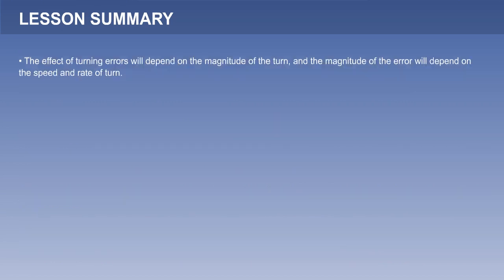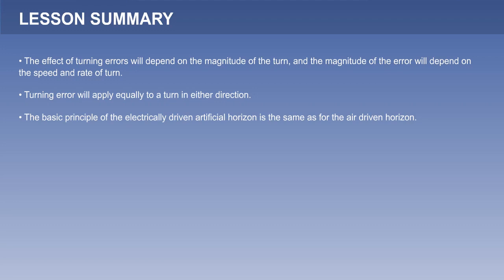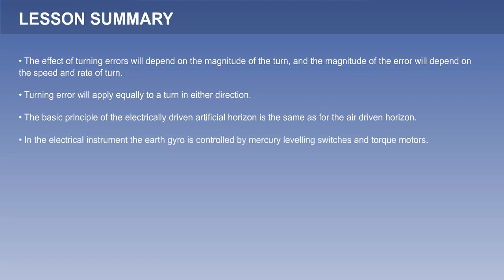The effect of turning errors depends on the magnitude of the turn and the speed and rate of turn, and the error applies equally to a turn in either direction. The basic principle of the electrically driven artificial horizon is the same as for the air-driven horizon. In the electrical instrument, the earth gyro is controlled by mercury levelling switches and torque motors.